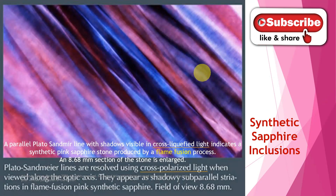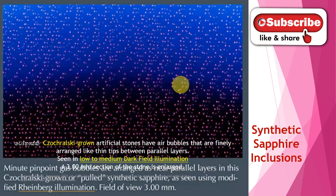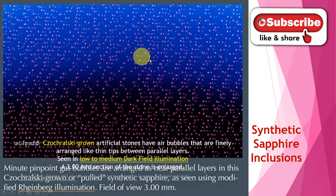Under cross polarized light it shows like this. Cross polarized light — that is the lighting condition. This is a synthetic pink sapphire. The production method is flame fusion — the method is flame fusion. This 8.68 millimeter section is enlarged. Here is another synthetic: the Czochralski method. We use the Czochralski method for this, so it is a Czochralski grown artificial stone — that means man-made or lab-created stone.